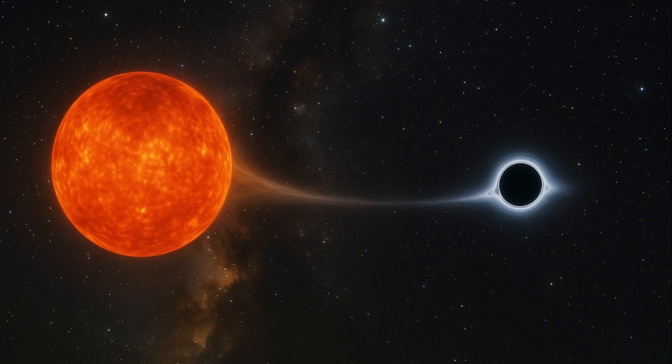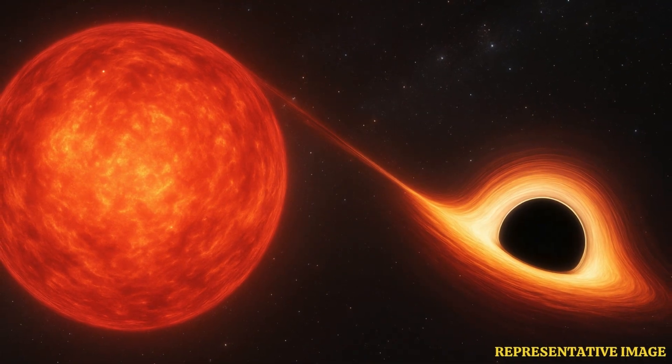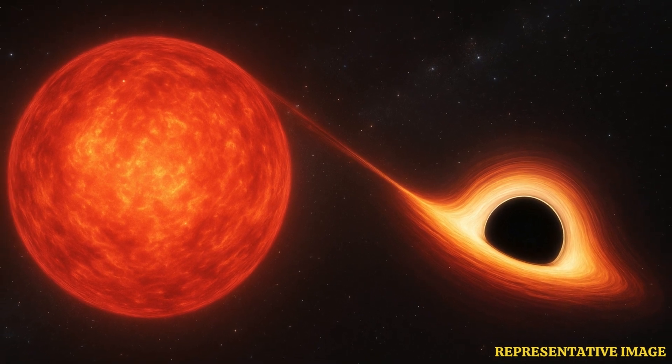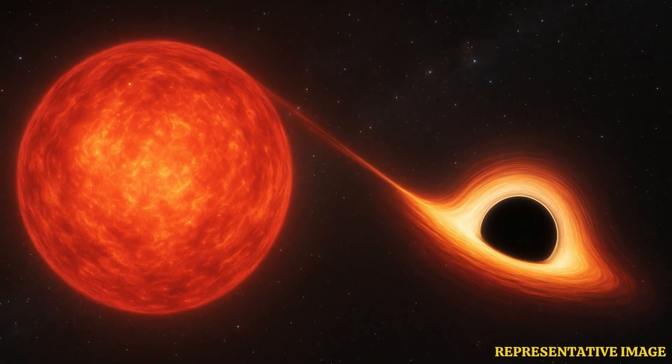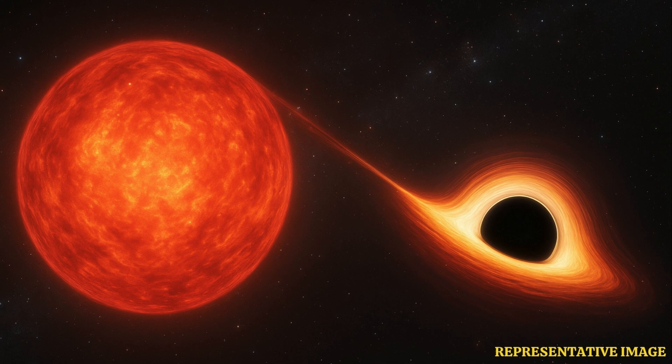So this unicorn, just three times the mass of our sun, 1,500 light years away. It's not just a curiosity. It's actually forcing a rethink of how black holes might form across the galaxy. That's the key takeaway, yeah. It suggests the universe might be making these things in more ways than our models accounted for.